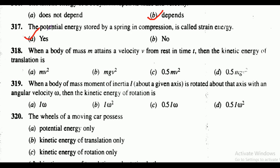Question 317: the potential energy stored by a spring in compression is called strain energy — yes or no? It is yes. Question 318: when a body of mass m attains a velocity v from rest in time t, the kinetic energy of translation is — the correct answer is option C, that is 0.5 mv square.